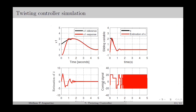The control signal plot shows that the control signal switches between four different values: plus 20, plus 10, minus 10, and minus 20. The MATLAB codes for this simulation can be downloaded from the link given in the description.